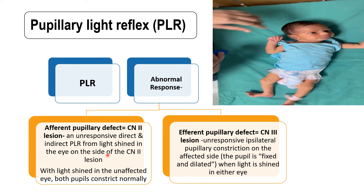For example, if the baby has a left-sided optic nerve lesion, then when you shine the light in the left eye there will be no pupillary constriction in both eyes. When you shine the light in the unaffected eye — for example, when the left optic nerve is damaged and you shine the light in the right eye — then both pupils will constrict; both direct and indirect will be present.